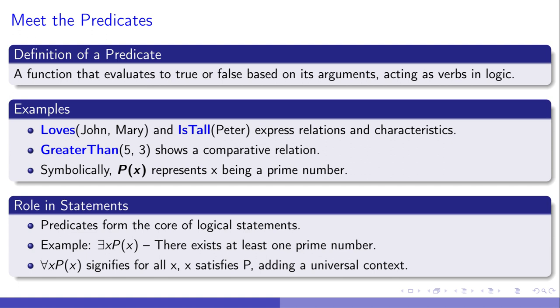Building on variables and constants, let's explore predicates, logic's pulse. Predicates, like loves or is tall, showcase relationships and attributes, making logical expressions dynamic. For instance, loves(John, Mary) delves deeper than a mere connection. It's about John's profound affection for Mary, grounding our logic in reality. Similarly, greater than(5,3) interweaves constants within a comparative context, enriching our logical toolkit. As these examples breathe life into static entities, they lay the groundwork for crafting intricate logical narratives, leading us seamlessly into the realm of quantifiers and vast logical landscapes.